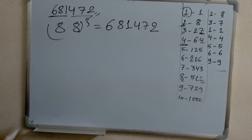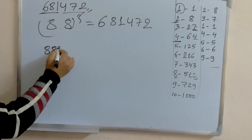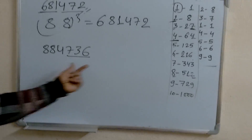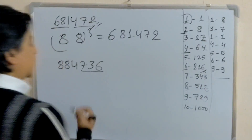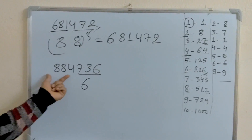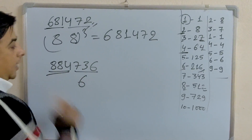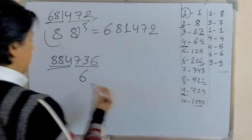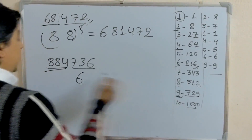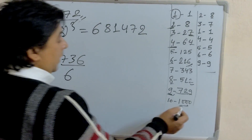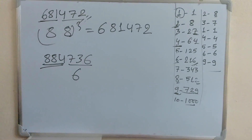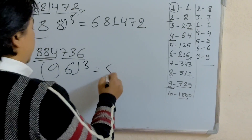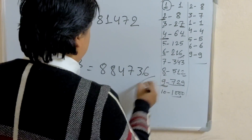Let's take the next example: 884736. See the last 3 digits — 736. The last digit is 6, which corresponds to 6 cube, so write 6. The remaining number is 884, which is greater than 729 (9 cubed) and less than 1000 (10 cubed), so take the smallest one and write 9. Therefore, 96 cubed equals 884736.